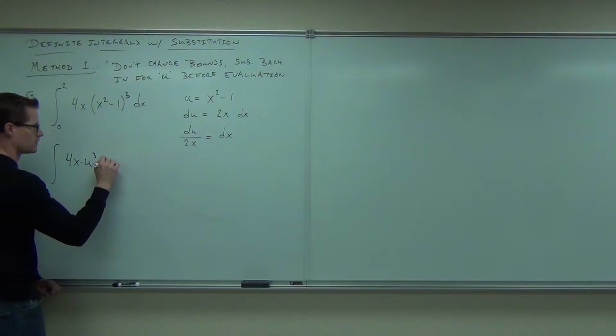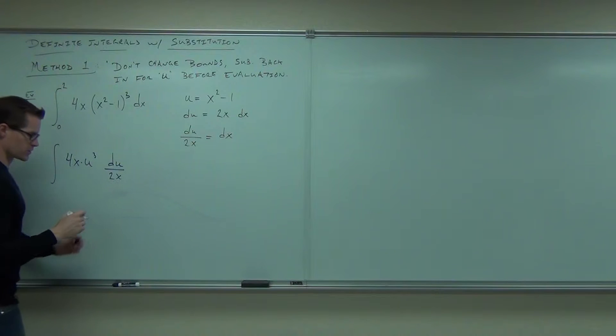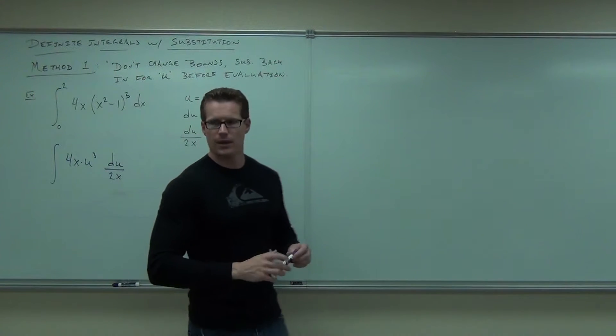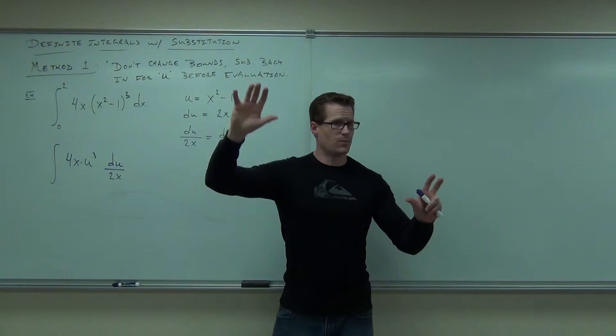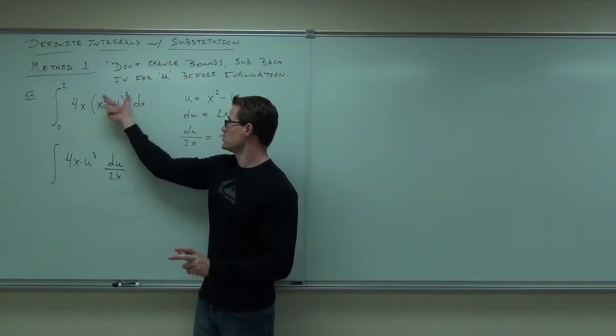u cubed. And then what? And then du over 2x. Excellent. From 2 to 0. Okay, we're going to talk about that in a second. First of all, how many people feel okay with our substitution? 4x is still there for right now. The u cubed comes from u cubed dx.